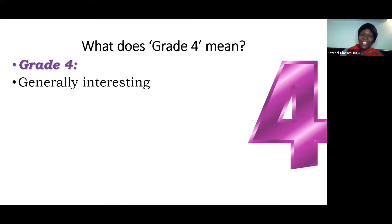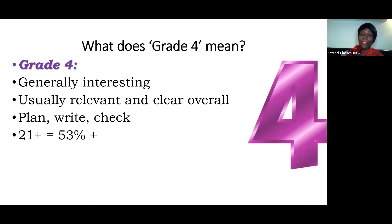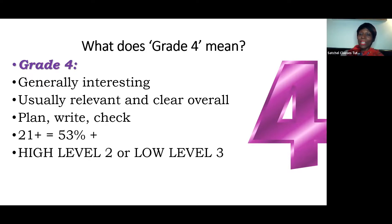Grade four for a candidate means that generally you are interesting, generally you are relevant, and usually overall your writing is clear. A grade four candidate is someone who plans their work, writes, and checks to make sure that everything is there — it's interesting, it's relevant, and it's clear communication overall. Roughly in the past few years, grade four for paper one, question five, section B has been very roughly around 53%, or 21 out of 40, which means in terms of the marking criteria, we're looking at a high level two or a low level three.